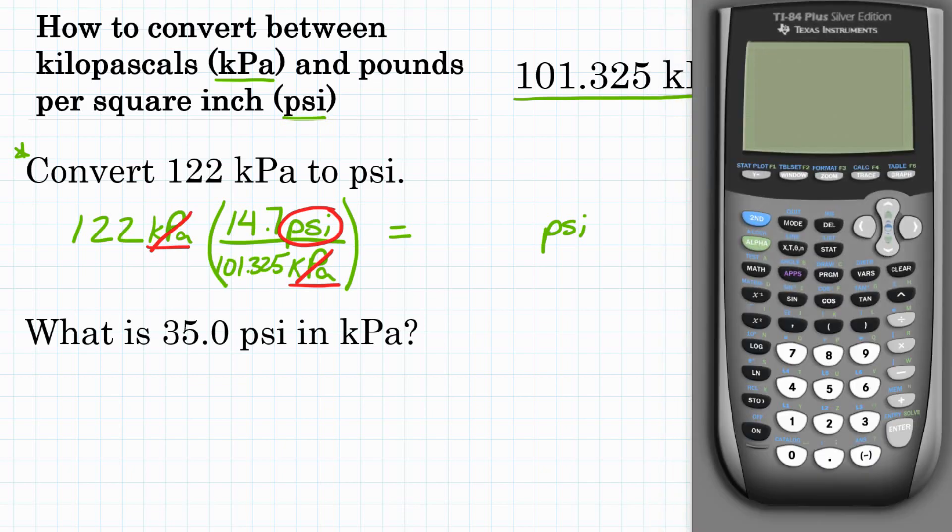We're going to start with 122, and we're going to multiply by our conversion factor, which is a fraction. So we'll multiply by the top and divide by the bottom. So we will multiply by 14.7, and then divide by 101.325. Hit enter, and our calculator gives us 17.699, with a couple other decimal places past that. Let's round to three significant figures, so that would give us 17.7.